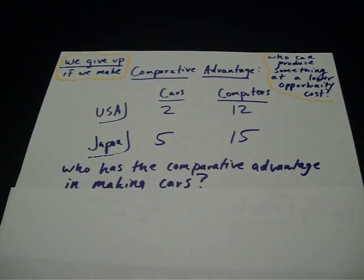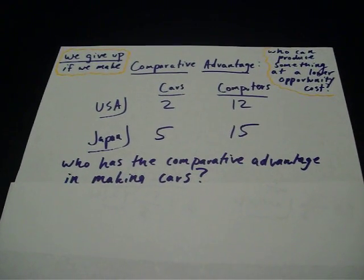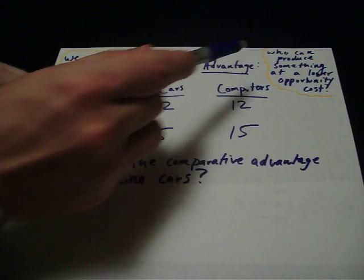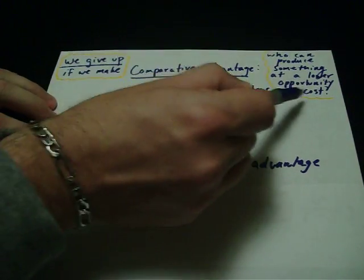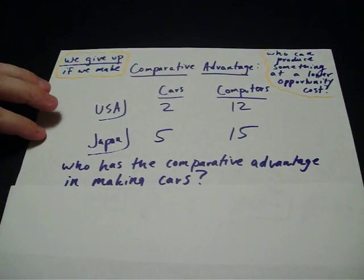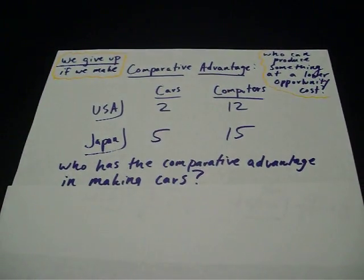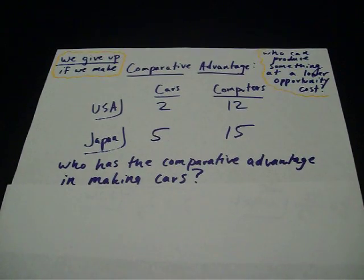Comparative advantage is a very important concept in economics. It just means who can produce something at a lower opportunity cost. Opportunity cost is what you give up when you make a decision.